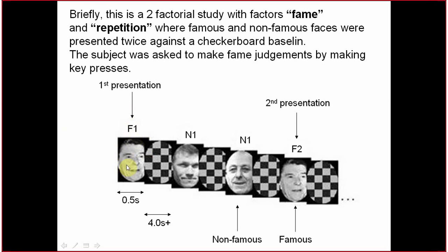Some faces — like Ronald Reagan — are well known; some faces are not known at all. The number of known and unknown faces across the experiment will be the same. Each face, either known or not known, will be shown two times — a first time and a second time — obviously with a different interval, or lag.